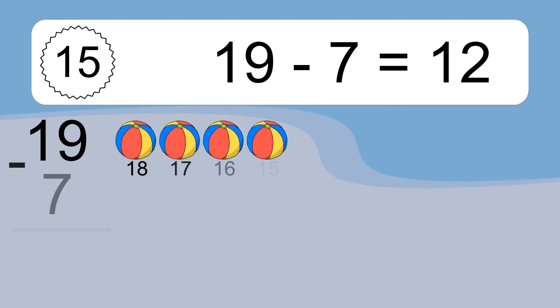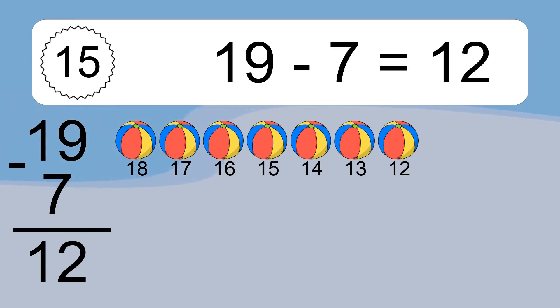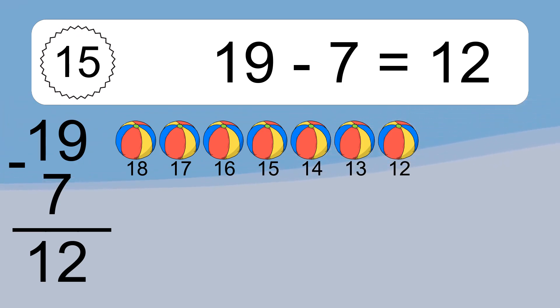19 minus 7 equals what? 19 minus 7 equals 12. Let's count it: 18, 17, 16, 15, 14, 13, 12.